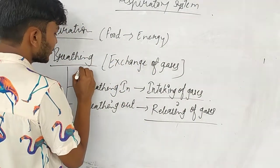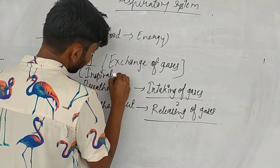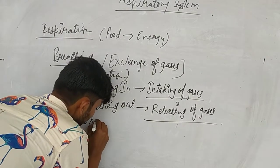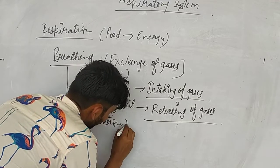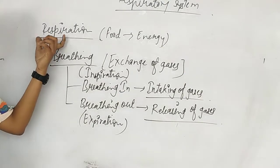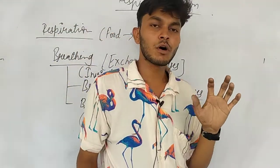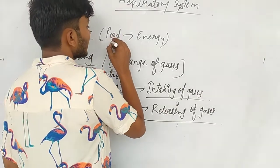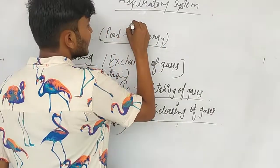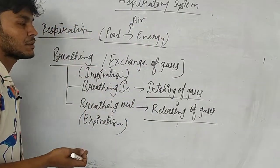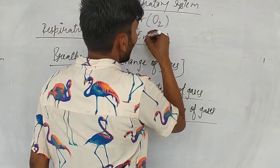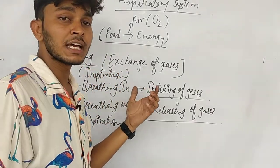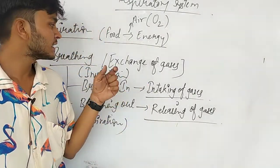Breathing in is also known as inspiration, and breathing out is also known as expiration. When animals or plants carry out the process of respiration, food is converted into energy. For this process, air — specifically oxygen — is required. The process by which we take in oxygen is called breathing: taking in gases and releasing gases.